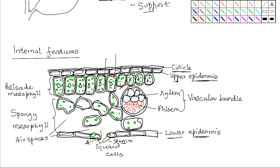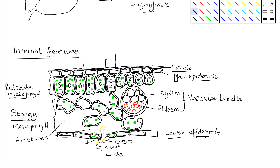Another internal adaptive feature of the leaf is the mesophyll tissue. There are two types of mesophyll: palisade mesophyll, located beneath the upper epidermis, and spongy mesophyll, located below the palisade mesophyll. The palisade mesophyll consists of cells that are packed with numerous chloroplasts. The chloroplasts contain chlorophyll molecules which absorb light energy used in photosynthesis. These palisade cells are located beneath the upper epidermis in order to receive maximum sunlight.